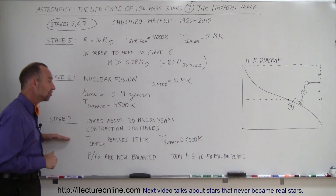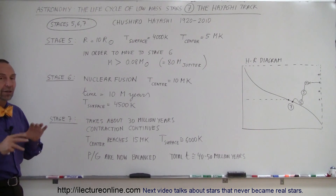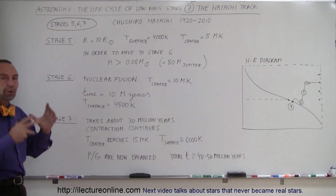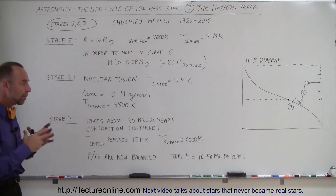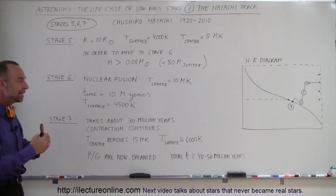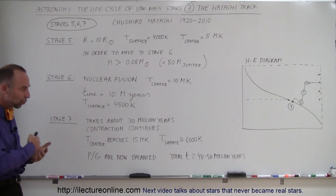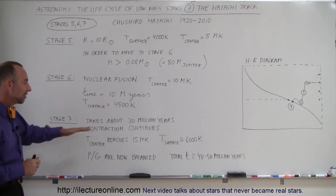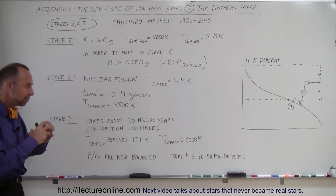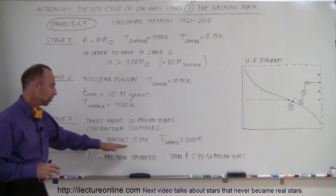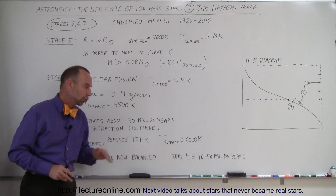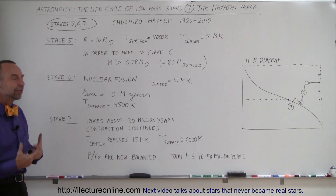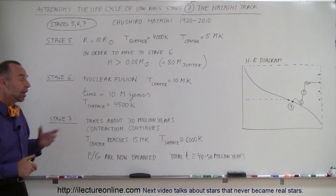At stage 7, it's a main-sequence star in its present shape and form, putting out the same amount of heat, the same size, the same surface temperature, the same core temperature — just shining away for the next billions of years.